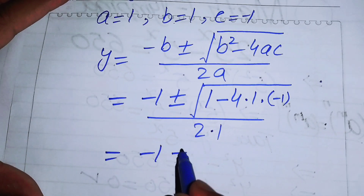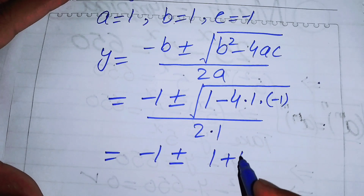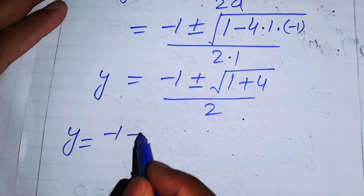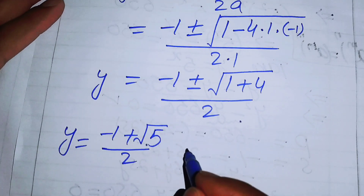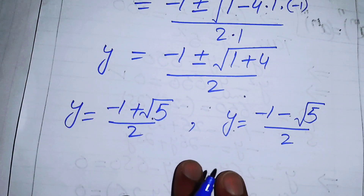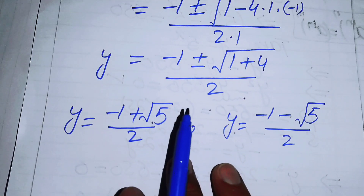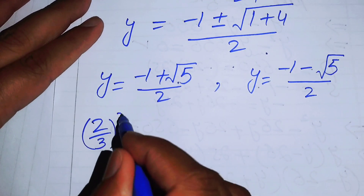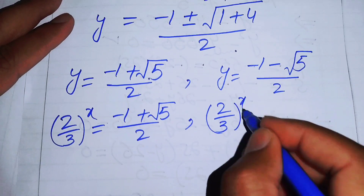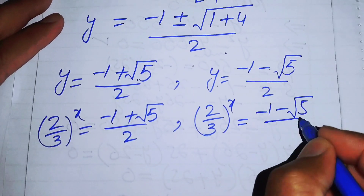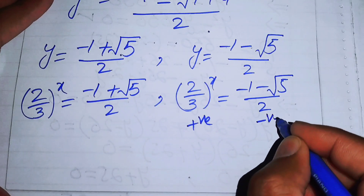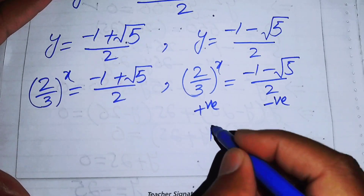This simplifies to 1 plus 4 under the square root over 2, giving us two values: y equals (minus 1 plus √5) over 2, and y equals (minus 1 minus √5) over 2. Since (2/3) to the power of x equals (minus 1 minus √5)/2 gives a negative value, and the exponential function always gives positive values, we reject this case and proceed with the positive solution only.